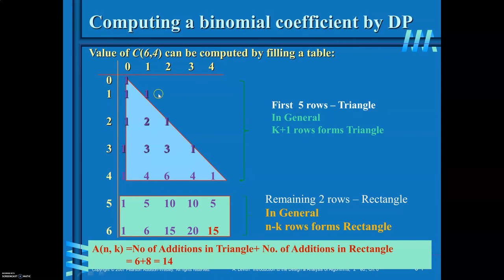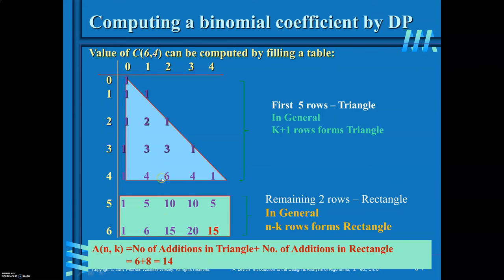In this example, the first 5 rows (including row 0) form the triangle — that is, K+1 rows form the triangle. The remaining rows (N minus K rows) form the rectangle. So we count additions separately: how many in the triangle and how many in the rectangle.